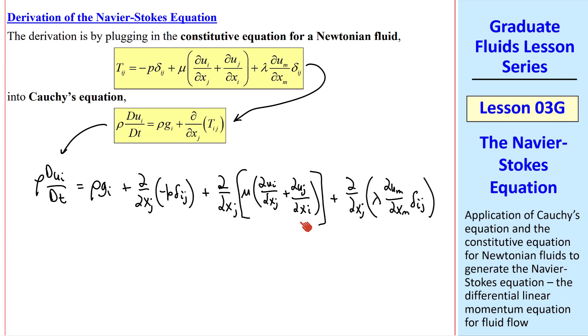Notice that we kept mu and lambda inside the derivatives, since in general, these fluid properties can be functions of space and time. But let's examine this term. As we've argued before, this is non-zero only when i equal j. So this term contracts to minus del p del xi.